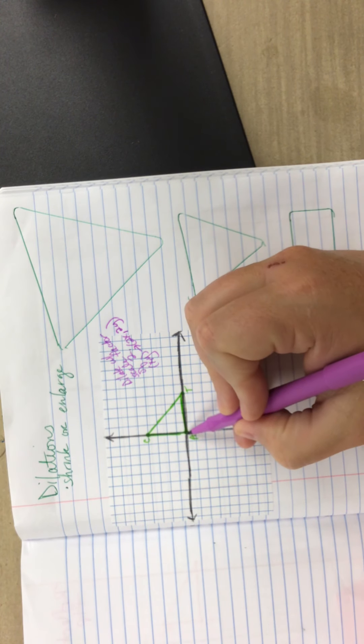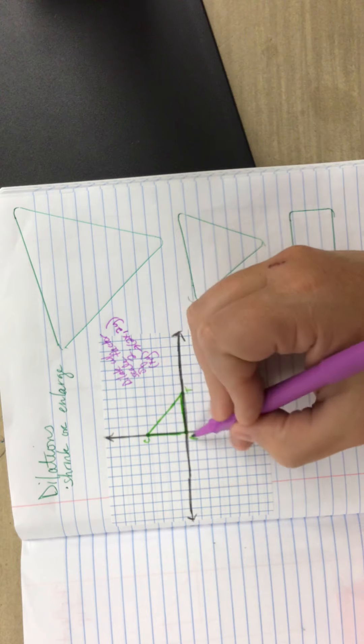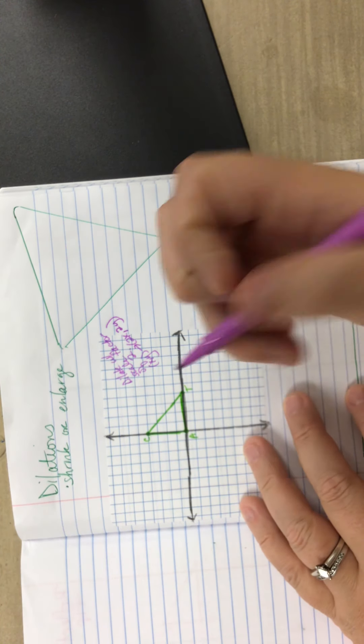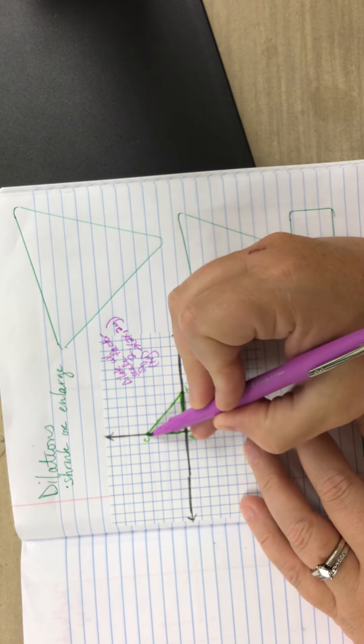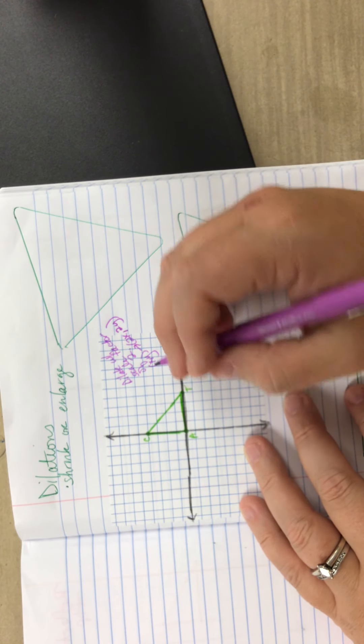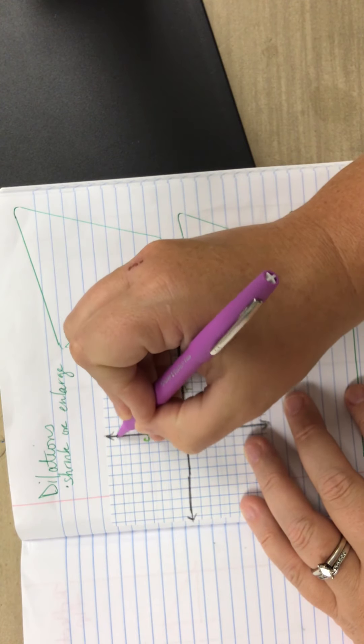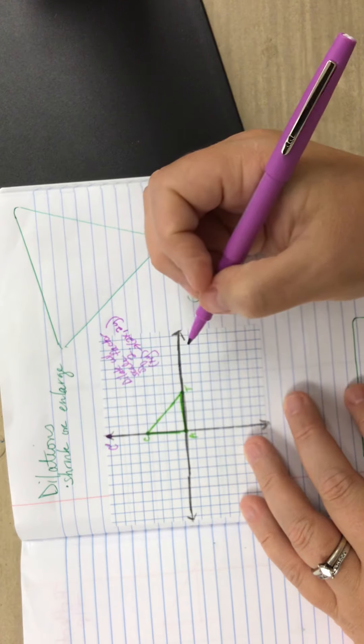So A is at 0, 0. Well, 0 times 2 is still 0. So A is not going to move. For C, it originally is at 0, 4. So if I multiply the coordinates by 2, I'm going to be at 0, 8. So 1, 2, 3, 4, 5, 6, 7, 8. So up here is my C-prime.